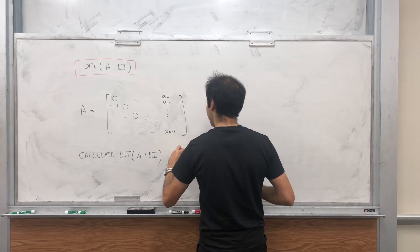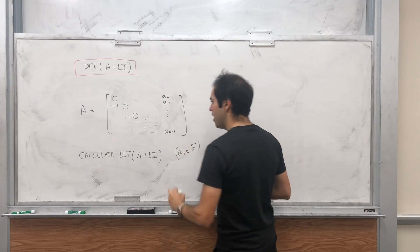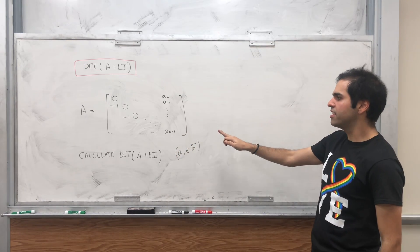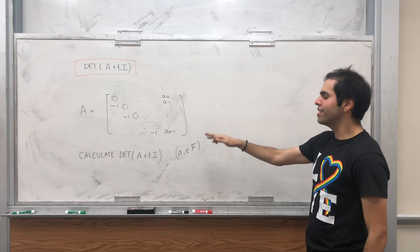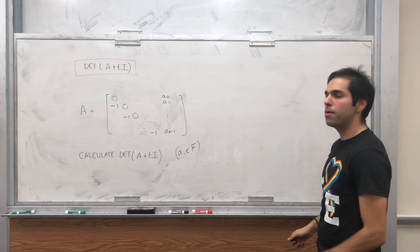So where A_i are scalars, and the question is not to calculate the determinant of that, but the determinant of A plus TI.